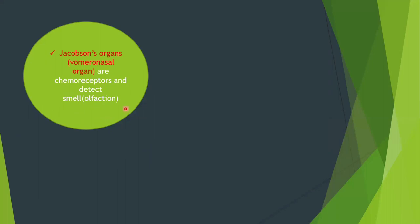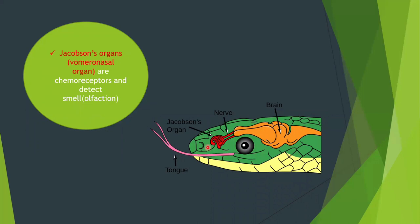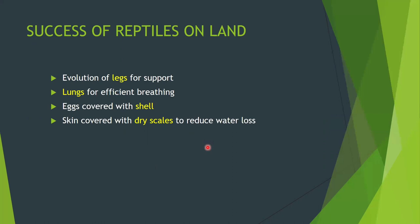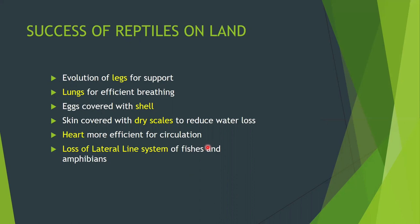Reptiles have Jacobson's organ, also known as the vomeronasal organ, which works as a chemoreceptor to detect olfaction or smell. The main reasons for the success of reptiles on land include: evolution of legs for support, lungs for efficient breathing, eggs covered with shell, dry scaly skin to reduce water loss, a more efficient heart for circulation, and loss of the lateral line system.